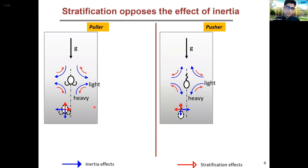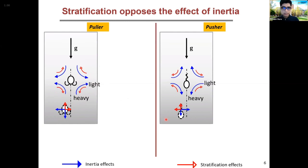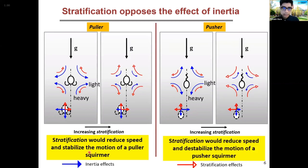This was in a homogeneous fluid. But if we include fluid stratification, the puller tries to pull heavier fluid into a lighter fluid. Because of buoyancy, this pulled packet of fluid tries to return to its original position. So the effect of stratification is basically to oppose this perturbation in the flow field by the swimmer. Stratification therefore tries to stabilize a puller while it tries to destabilize a pusher. As we increase the effect of stratification, a puller becomes stable and a pusher may become unstable.